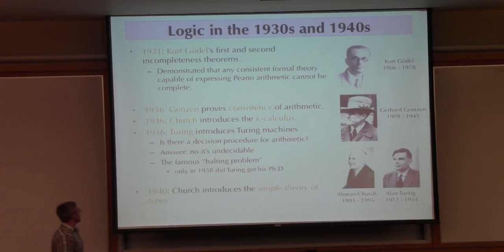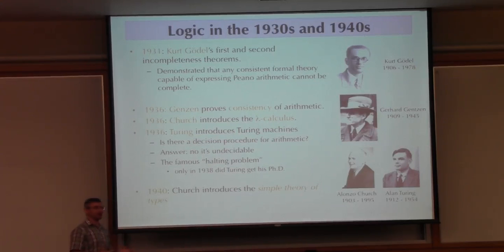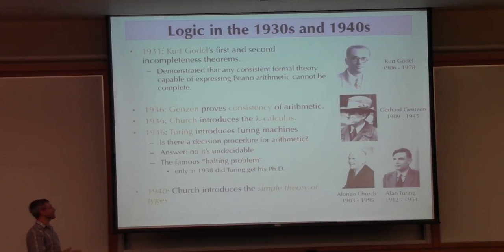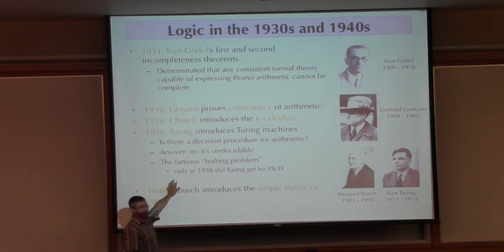Other highlights from the 1930s: in 1936, Gentzen proved the consistency of arithmetic, introducing sequent calculus and cut elimination — techniques still used today. Also in 1936, Church introduced the lambda calculus as an alternative formulation for these logics. And also in 1936 — a very big year for logic — Turing came up with Turing machines and proved that decision procedures for Peano arithmetic are undecidable, leading to the characterization of the famous halting problem. As an interesting side note, Turing didn't get his PhD until 1938, two years after all these amazing things.